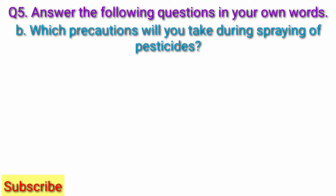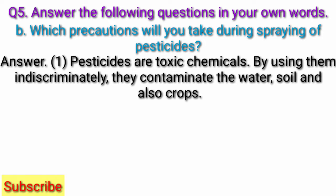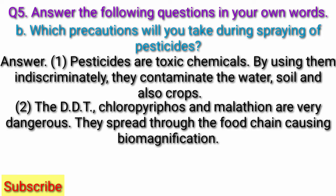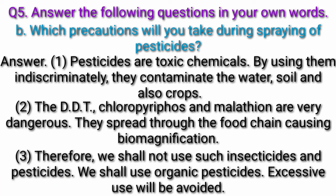Question B: Which precautions will you take during spraying of pesticides? Answer: Pesticides are toxic chemicals. By using them indiscriminately, they contaminate the water, soil and also crops. DDT, chloropyrifos and malathion are very dangerous. They spread through the food chain causing biomagnification. Therefore, we shall not use such insecticides and pesticides, and shall use organic pesticides instead.